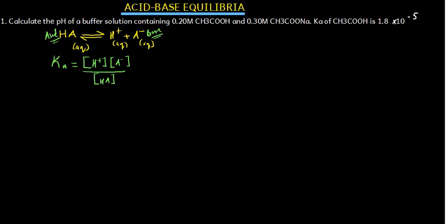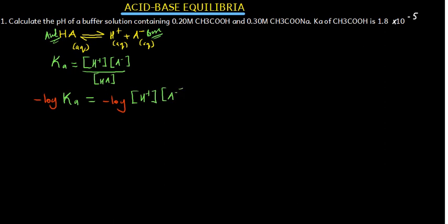For example, negative log of hydrogen concentration becomes pH. Negative log of hydroxide becomes pOH. Negative log of Ka becomes pKa. So I'm going to take the negative log of the Ka expression. Taking negative log of Ka on the left side equals negative log of the right side — writing hydrogen first, then A⁻ over HA.